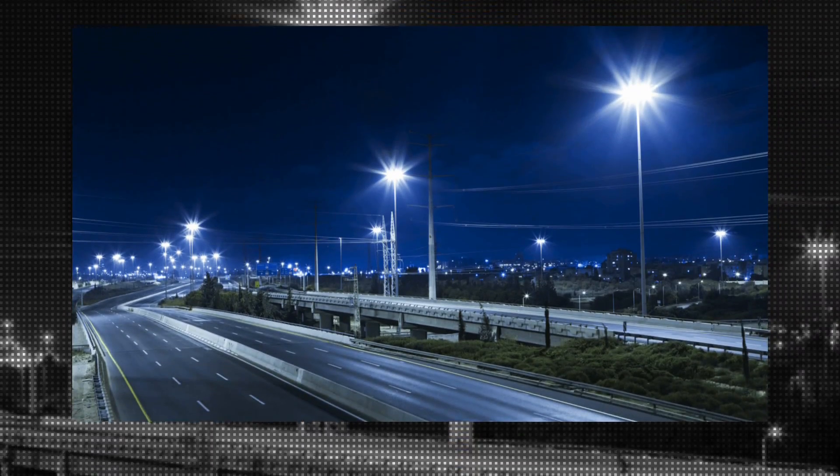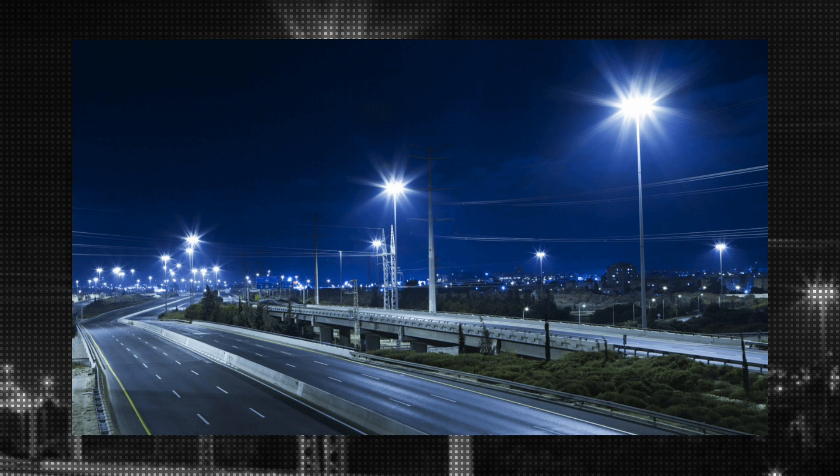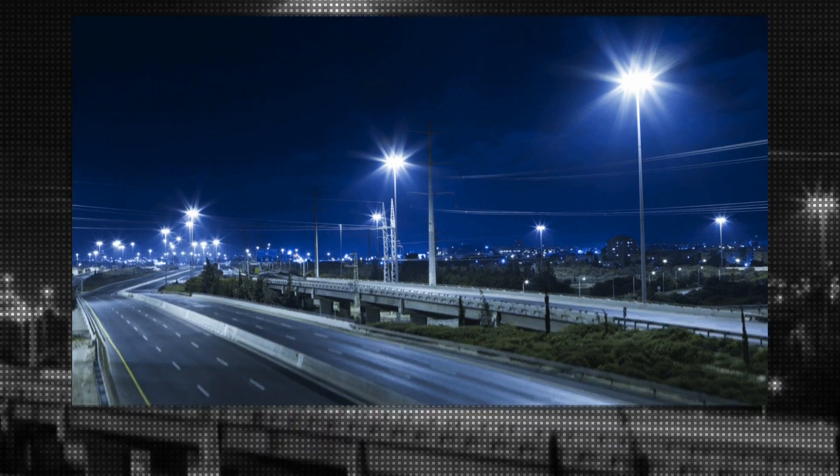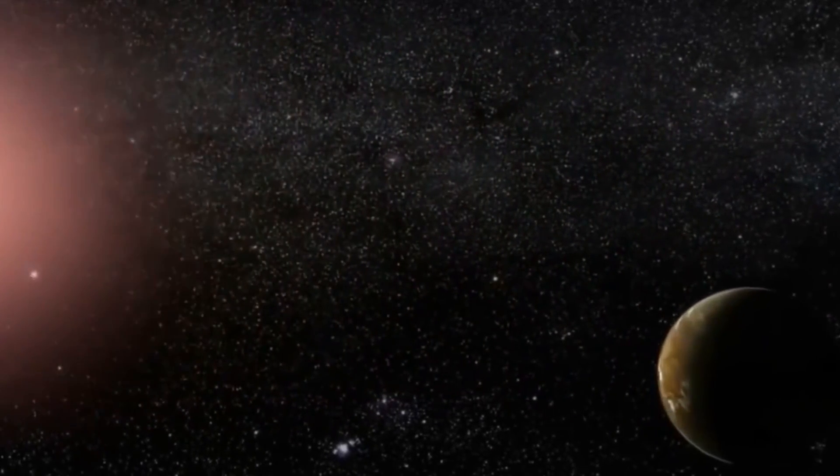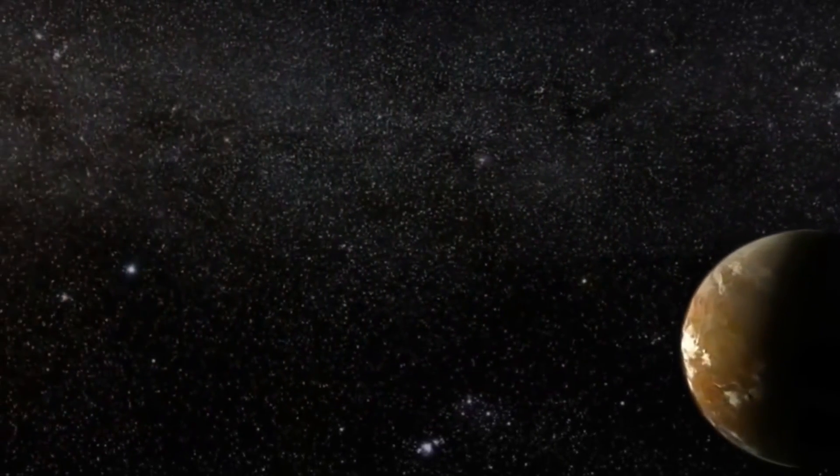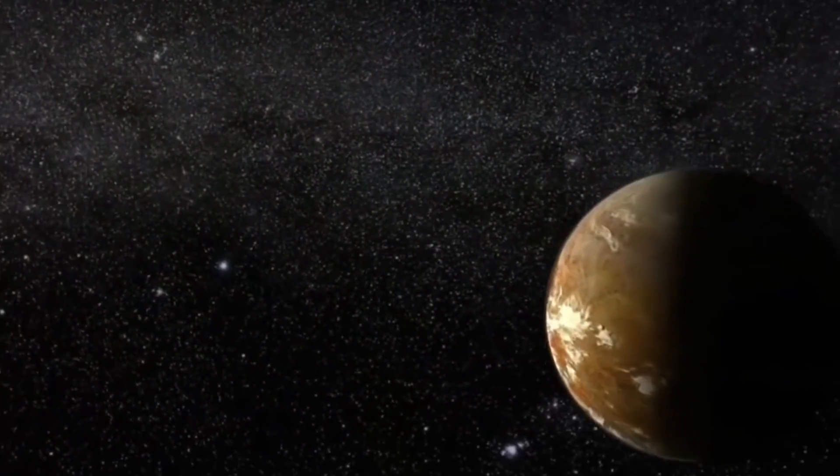However, if it's illuminated artificially, like by street lights or city lights, the light curve will be regular and predictable, similar to that of an LED light source. We can tell whether Proxima b has natural or artificial illumination by analyzing the curves.